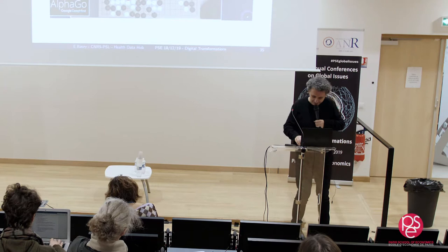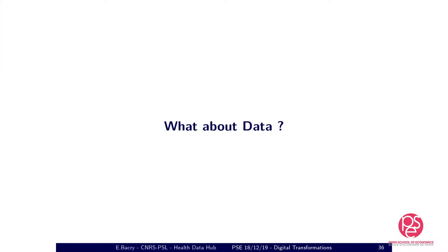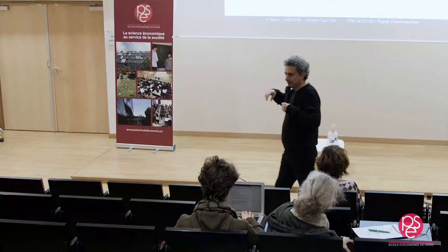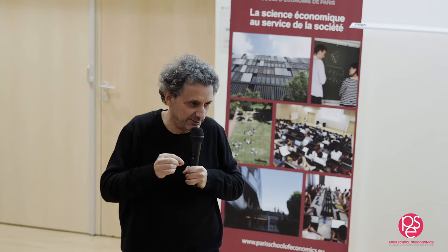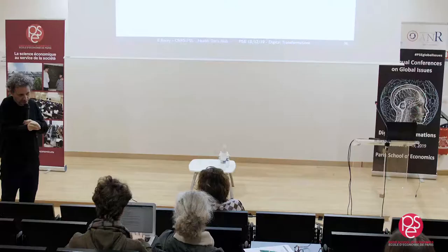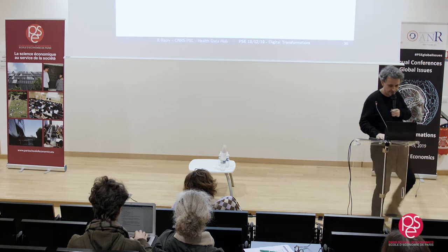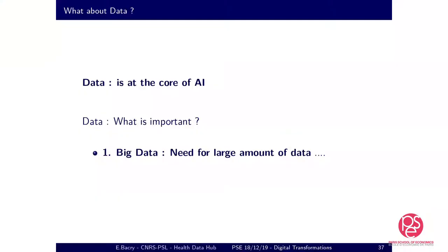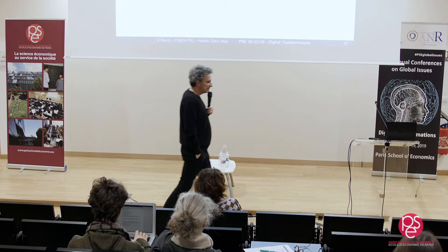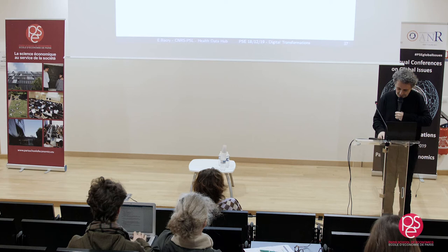Now I have to talk about data. Data is at the core of AI — you can't do AI without data. The limit between algorithm and data is extremely thin; some algorithms in AI are basically the data themselves. What's important about data? First, it's best to have big data — a large amount of examples. But this is not the most important thing today. Many people focus on having enormous amounts of data, but that's not what matters most.